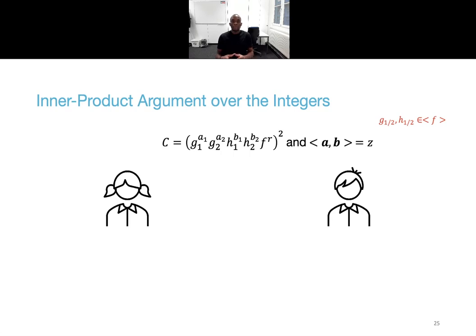Now that integer commitments have been constructed, the next step is to build an efficient inner product argument over the integers. Or in other words, a protocol to argue that an opening (a, b) to a commitment is so that the inner product between a and b is equal to a public integer z. Actually, the argument later used for the Diophantine satisfiability is one in which the inner product is also committed. And it's here again important that all the bases g_i, h_i, and e are all in the subgroup generated by the base of the randomness, which is here f.